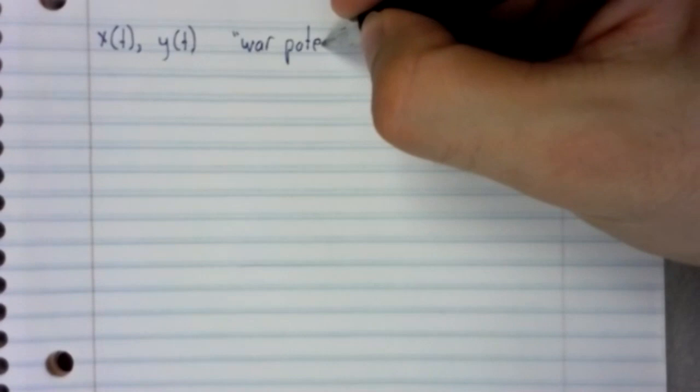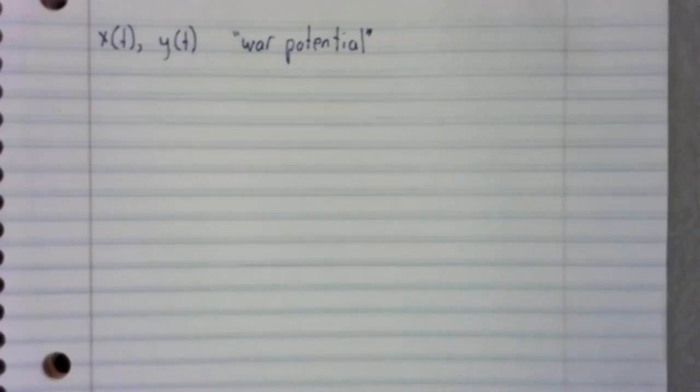Suppose we have two nations, x and y. We'll let x(t) and y(t) be the war potential of these nations. For simplicity, let's call this the amount of money they spend on their military. The nations are in a state of conflict which has not escalated to actual warfare.